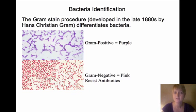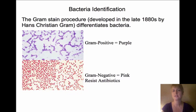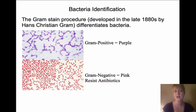We have a couple of ways to identify bacteria. The Gram stain procedure was developed by Hans Christian Gram in the late 1880s and shows us the differences in bacteria. Gram positive would be purple and Gram negative would be pink. If it's Gram negative, we have a problem because that type of bacteria resists antibiotics — it's not as easily killed by them.